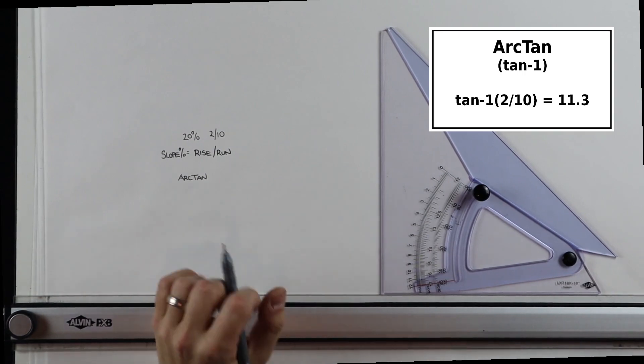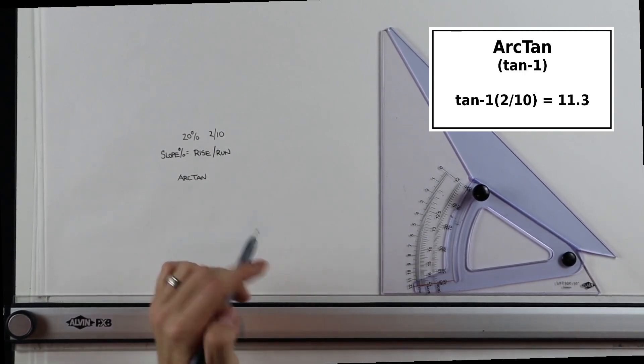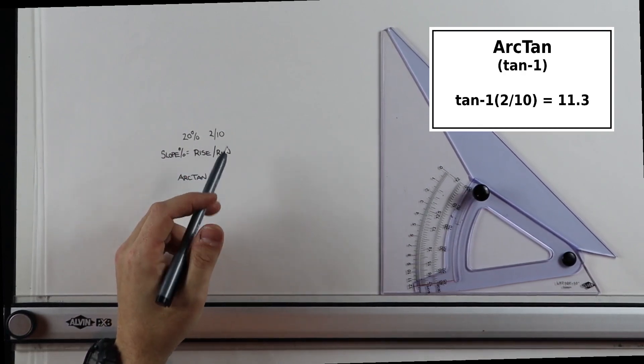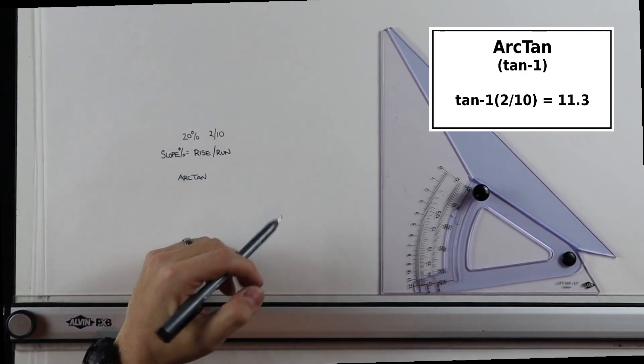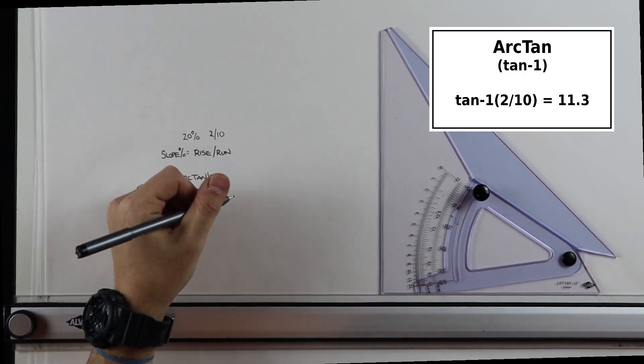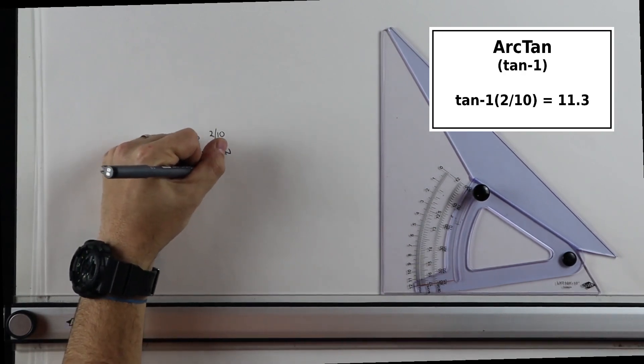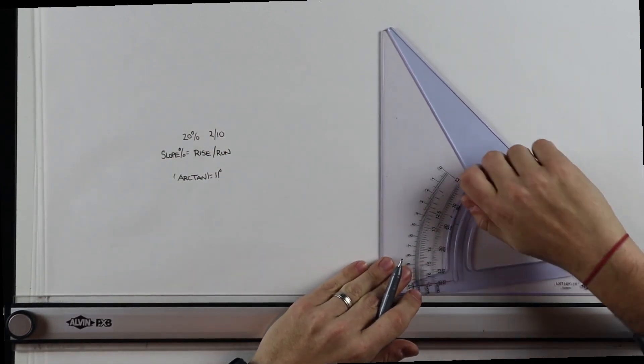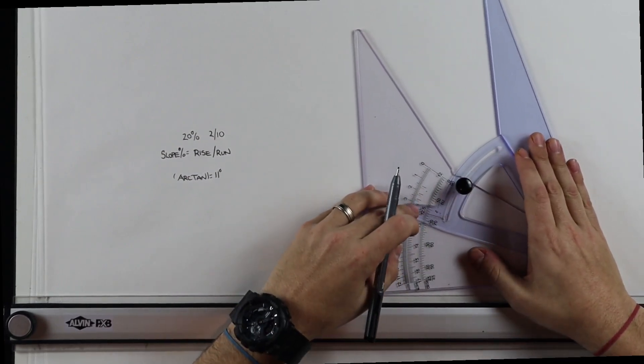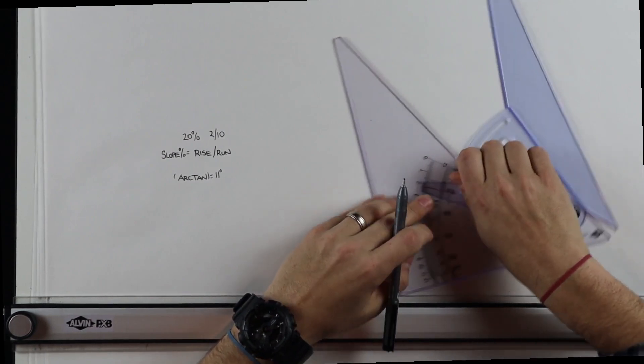So if I take my calculator and I plug in into the arc tan function, a rise of two divided by a run of ten, that's a twenty percent slope, and I solve for that, arc tan is going to give me a degree, an angle of about eleven degrees. So now I can actually set my adjustable triangle to eleven degrees, and I'm just going to go to eleven degrees, I lock it.